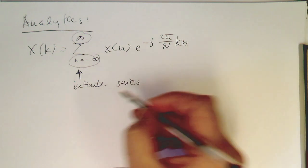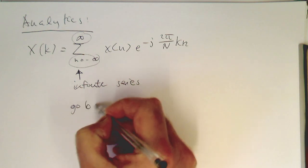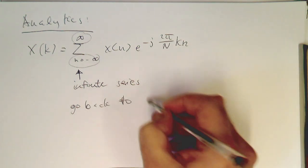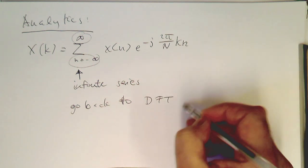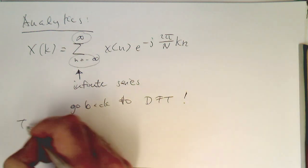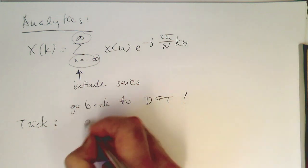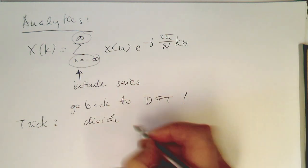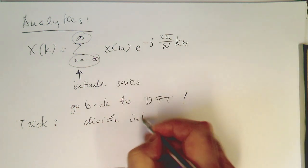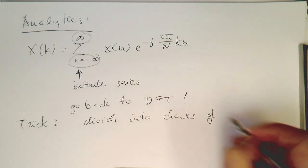And so what we would like to do now, we would like to go back to our discrete Fourier transform. Okay, so the trick is similar to the one we have done before. So if we divide this formula up here into chunks of n.